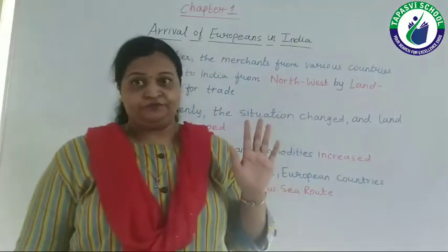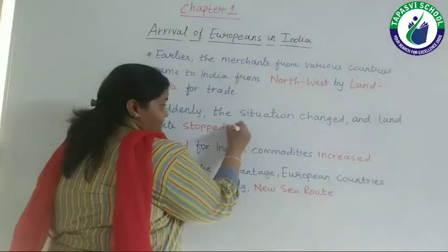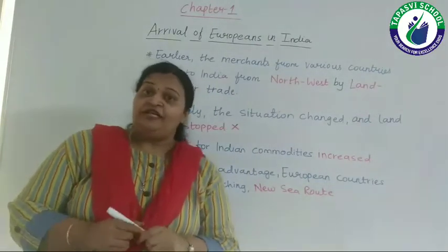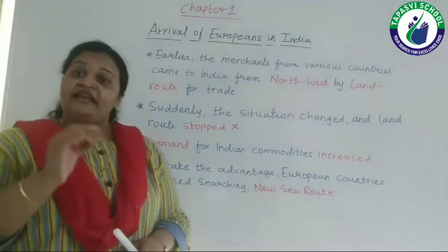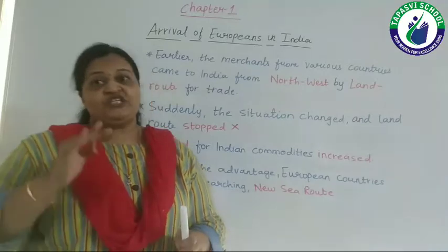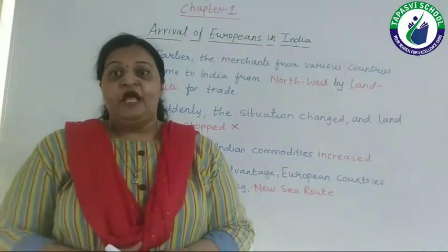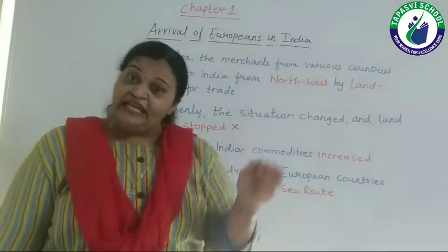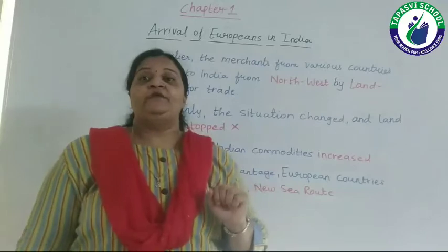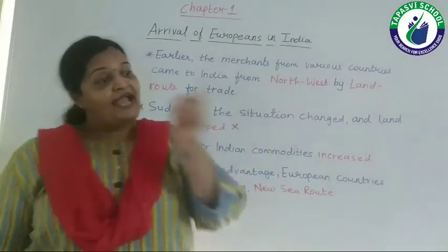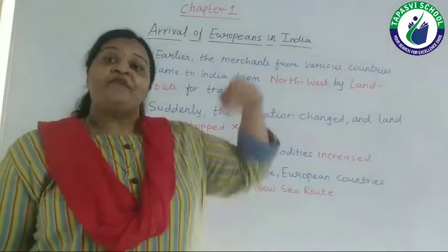Everything was going smooth, but suddenly the situation changed. The land route stopped — the route via which they were coming to India. Now what was the reason that the land route stopped? The reason is the Turkish country, Constantinople. Whenever they were coming via the land route to India, they needed to cross Constantinople. But Constantinople denied — they said not to cross their boundaries to go to India. This is how the trade relations between India and Europe stopped.